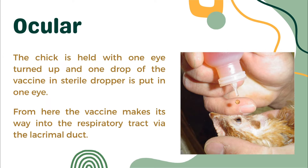In the ocular vaccination method, the cheek is held with one eye turned up and one drop of the vaccine from a sterile dropper is placed in one eye. From here, the vaccine makes its way into the respiratory tract via the lacrimal duct.